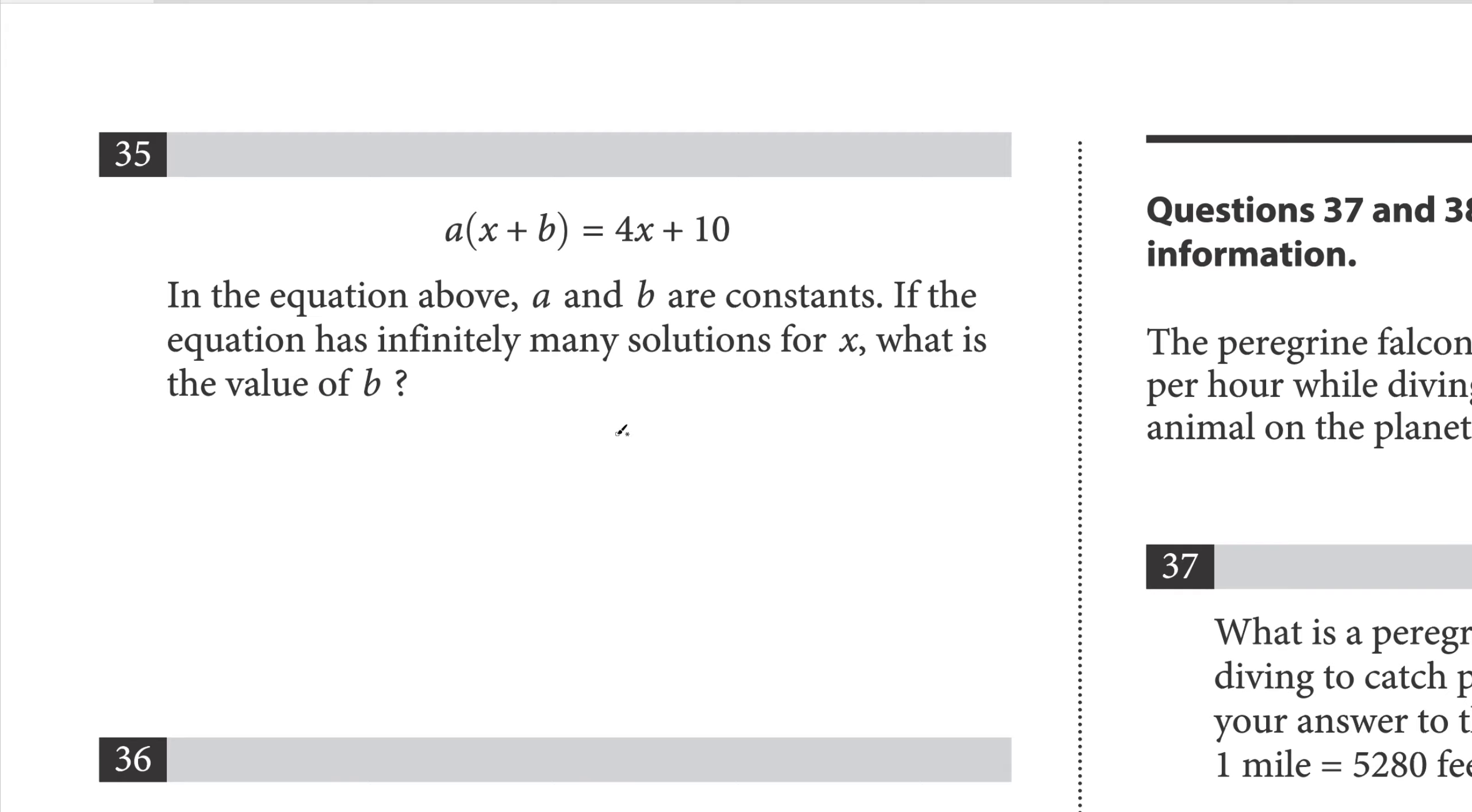In the equation above, a and b are constants. If the equation has infinitely many solutions for x, then what is the value of b? For the equation to have infinitely many solutions, it must be the same equation. So ax plus ab equals 4x plus 10. I just distributed. Then we know that a equals 4 since the x terms would have to match up. So a equals 4, so let's put that in right here.